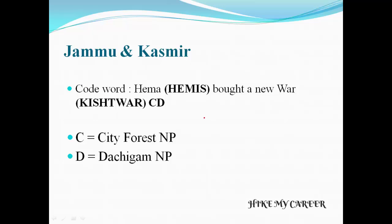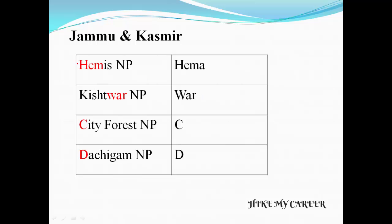Next we are going to see about Jammu and Kashmir national parks. The code word is: Hema Baathya New War City. The parks are: Hemis National Park, Kishtwar National Park, City Forest National Park, and Dachigam National Park. The story is: Hema Baathya New War City.